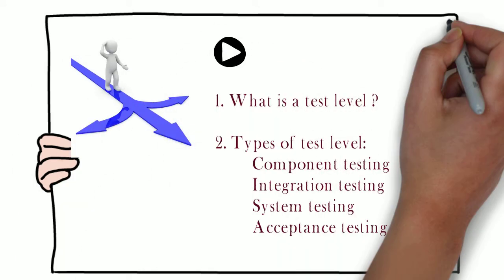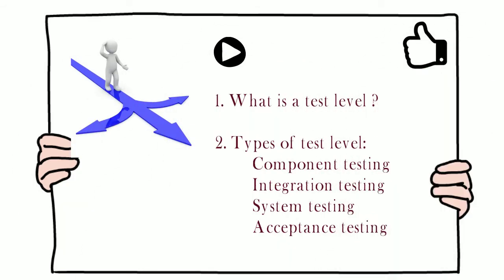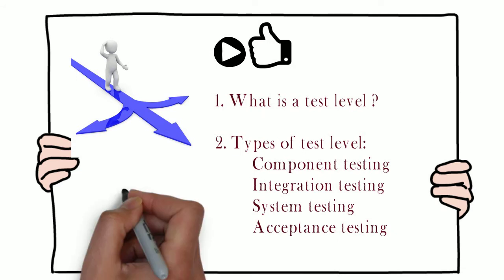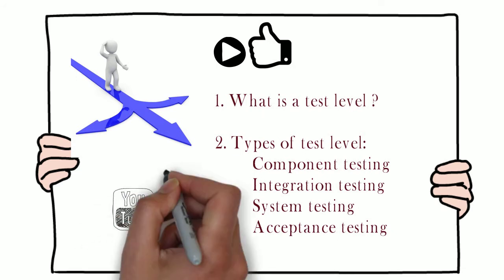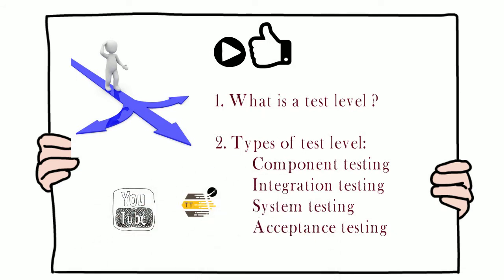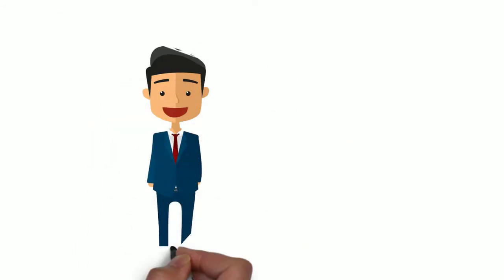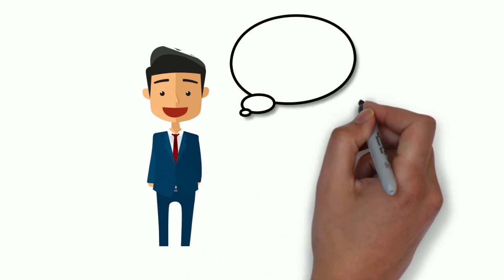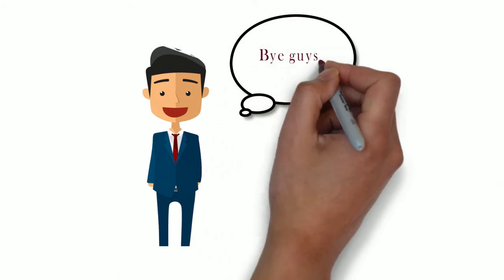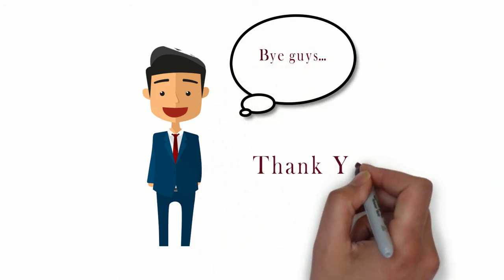To summarize, we discussed test levels and their different types: component testing, integration testing, system testing, and acceptance testing — including user acceptance testing, operational acceptance testing, compliance acceptance testing, and alpha and beta testing. Please like this video if it helped you and subscribe to my channel, Test Talks. This is Sharin, signing off — thank you!